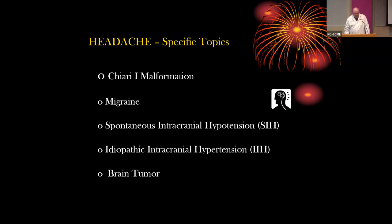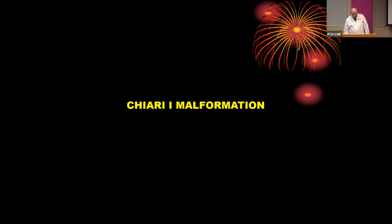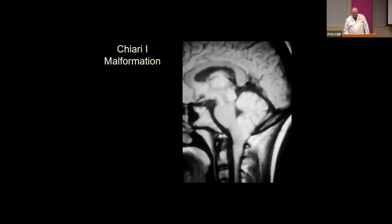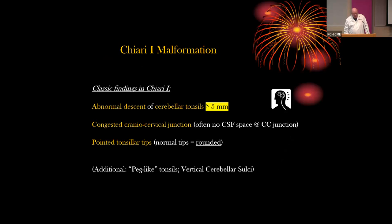Specific topics today are Chiari 1, migraine, SIH (spontaneous intracranial hypotension), IIH (idiopathic intracranial hypertension), and a word about headache and brain tumor. Chiari 1 malformation is an isolated malformation of the posterior fossa where the tonsils descend below the level of the foramen magnum. The classic findings are abnormal descent of the cerebellar tonsils greater than five millimeters, a congested cranio-cervical junction with often no CSF space, and pointed tonsillar tips — normal tonsillar tips being rounded — along with a vertical orientation of the cerebellar tonsils.